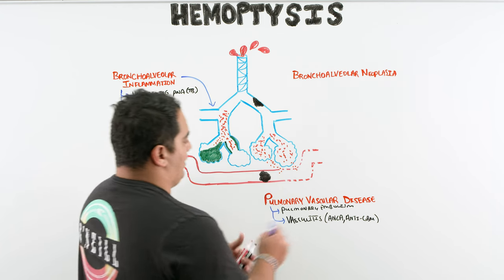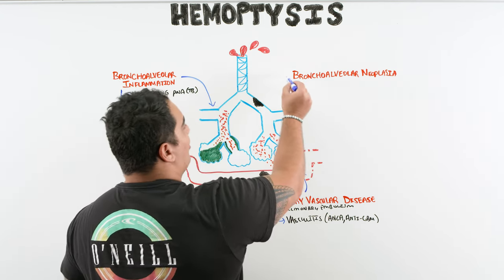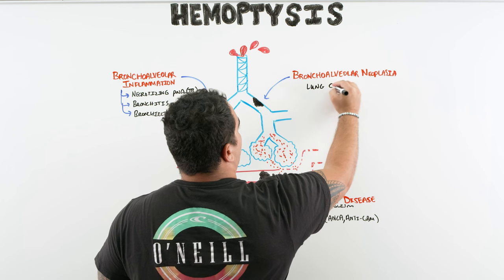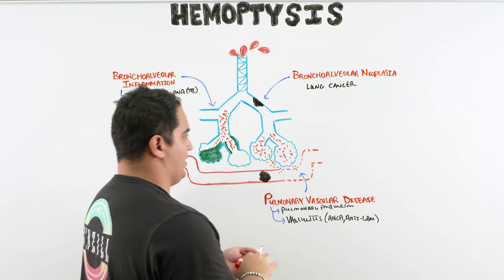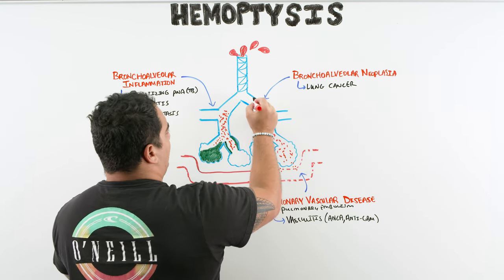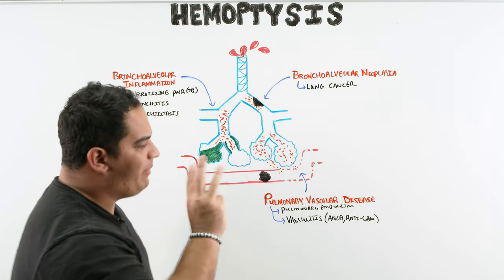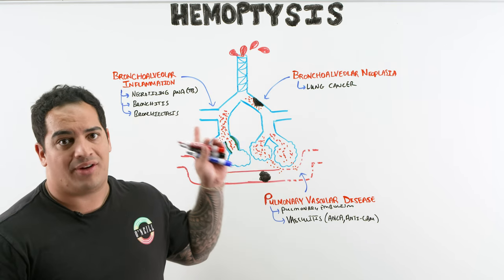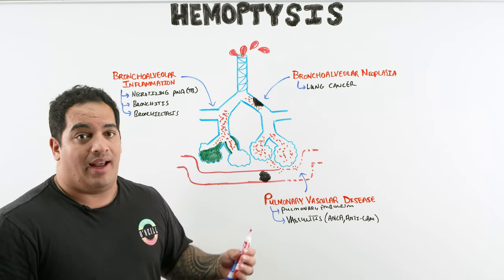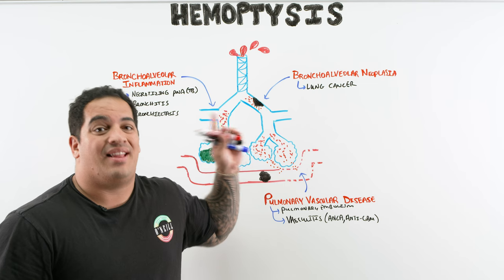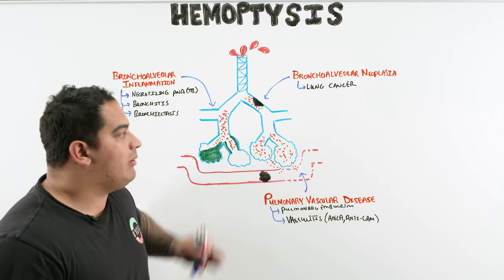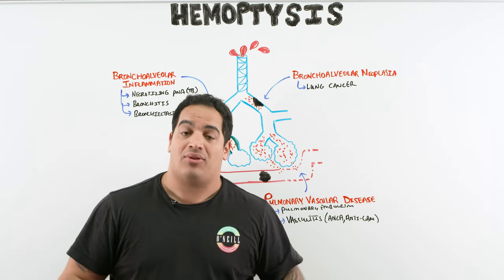The last major cause is bronchoalveolar neoplasia — usually lung cancer. Lung cancer gets lots of blood supply, and that can lead to bleeding. So when a patient has hemoptysis, think three pathophysiological processes: inflammation or infection (bronchiectasis, necrotizing pneumonia, tuberculosis, acute bronchitis); bronchoalveolar neoplasia such as lung cancer; and pulmonary vascular disease with emphasis on vasculitis.